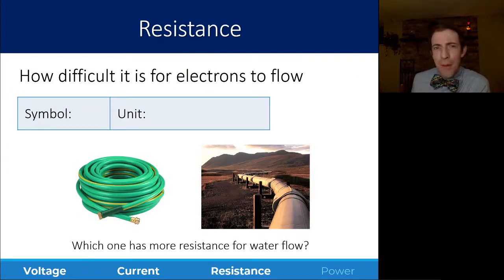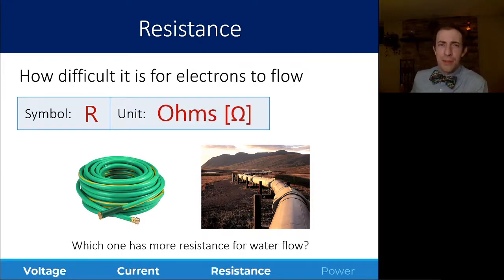Our third property is resistance. Resistance is how difficult it is for electrons to flow. The symbol for this is a capital R, and we're going to use the unit of ohms to measure resistance. Ohms, our abbreviation, is a capital omega symbol, which kind of looks like a horseshoe or rainbow with feet. So resistance is how hard it is for these electrons to actually travel through.